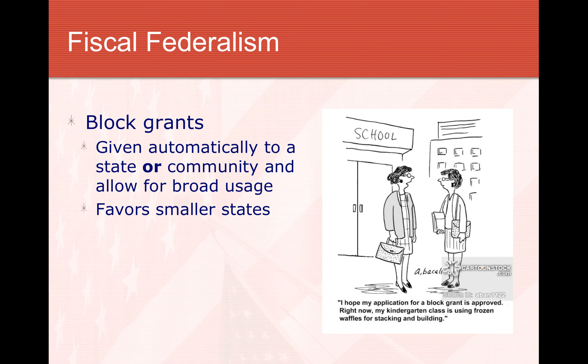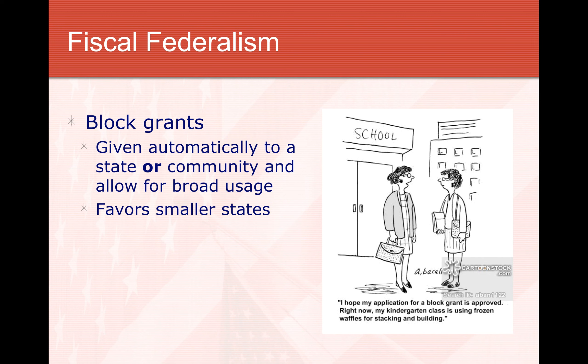Block grants often tend to favor smaller states by population. For example, Wyoming is a geographically large state but has very few people, so it ends up getting a large share of block grant money on a per-capita basis. Whereas California has a huge population and a large state, but when calculated per person, the block grant amount ends up not being a whole lot per person.